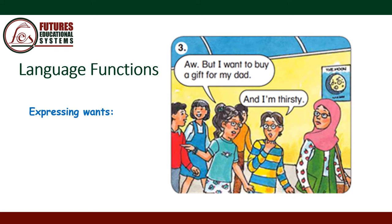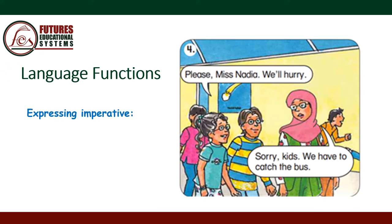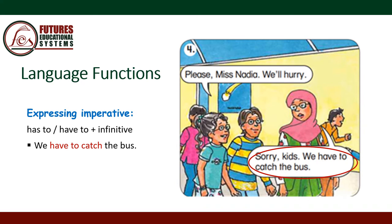Picture 3: expressing wants — we say 'I want to + the infinitive form of the verb.' For example: 'I want to buy a gift for my dad.' Picture 4: expressing imperatives — we use 'has to / have to + the infinitive.' For example: 'We have to catch the bus.' 'We have to study hard.'